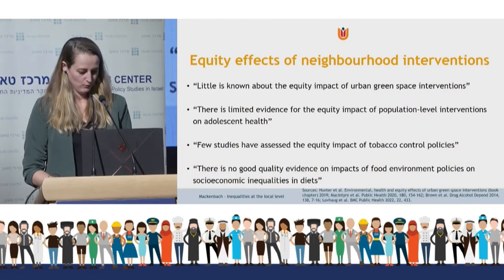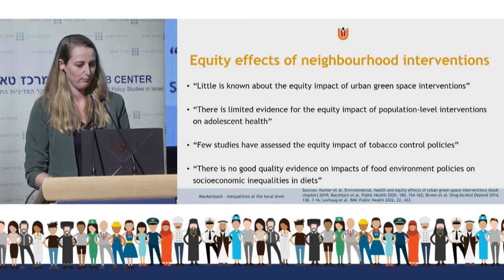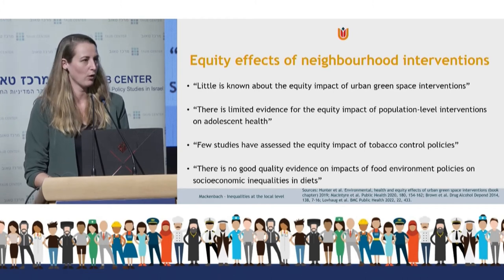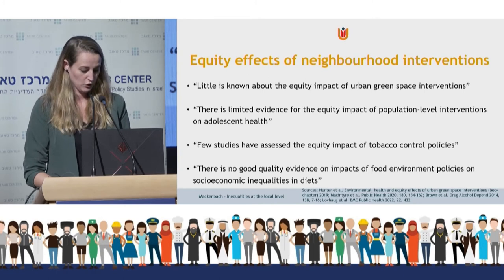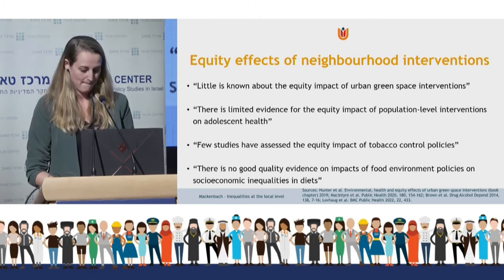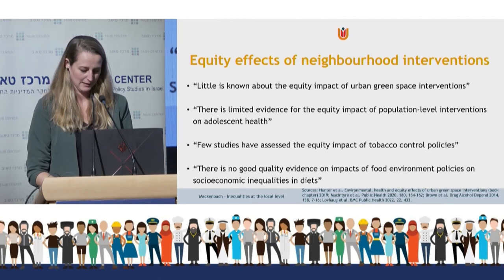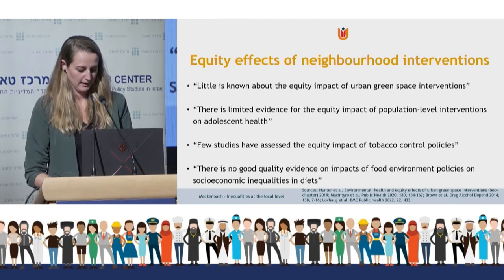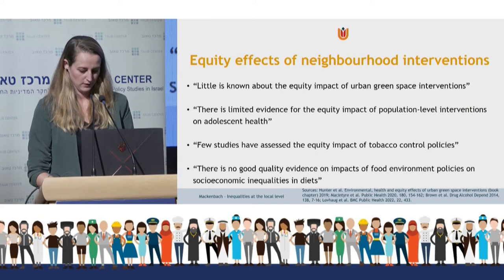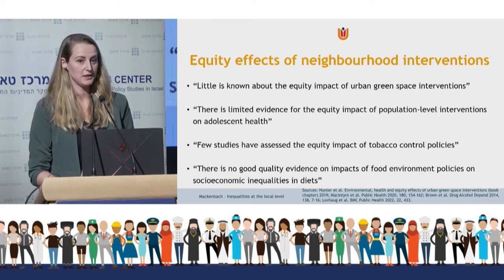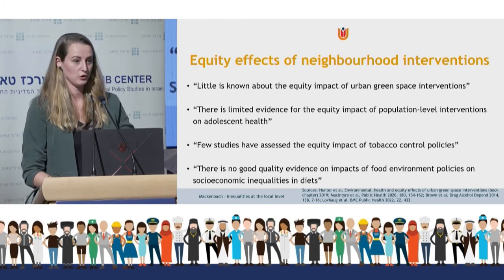Unfortunately, while theoretically plausible, there is very little empirical evidence to support the hypothesis that neighborhood-level or environmental-level interventions are more equitable or reduce socioeconomic inequalities more effectively than individual-level interventions. Several recent systematic reviews highlight this lack of evidence, which is a major gap in the literature that should be addressed.